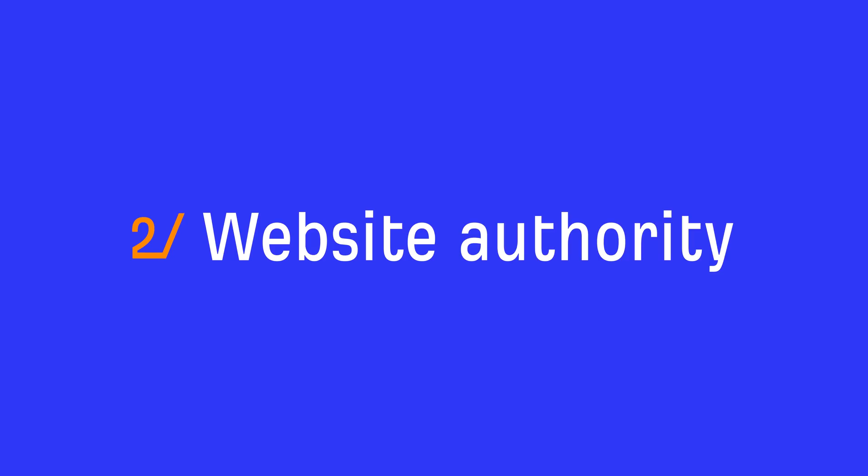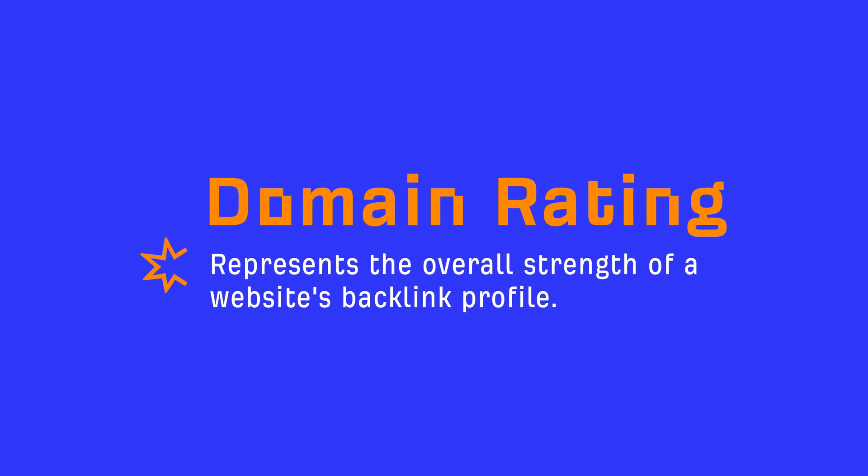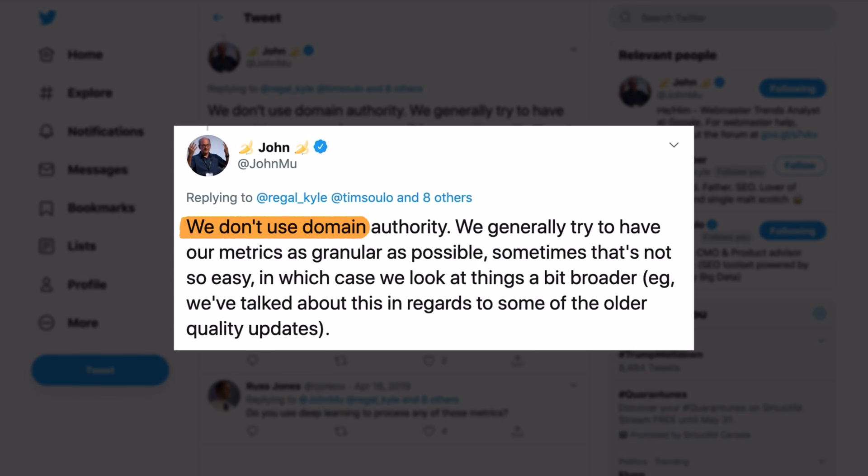The second thing to consider is website authority. At Ahrefs, we have a metric called domain rating, which represents the overall strength of a website's backlink profile. While the majority of SEOs believe that Google uses some kind of domain-level metric in their ranking algorithm, John Mueller has publicly said they don't. Since our keyword difficulty metric doesn't take website authority into account, interpreting KD will depend on what you believe. Let's use some examples of queries with a low difficulty score where the ranking pages are from highly authoritative websites.